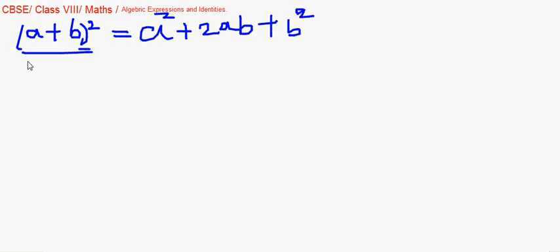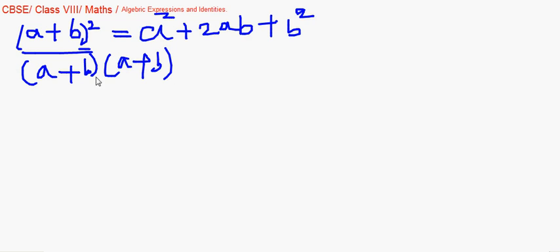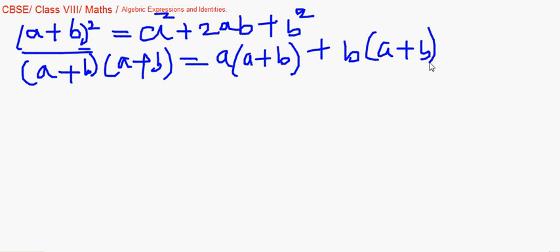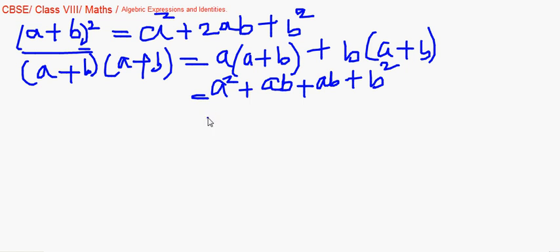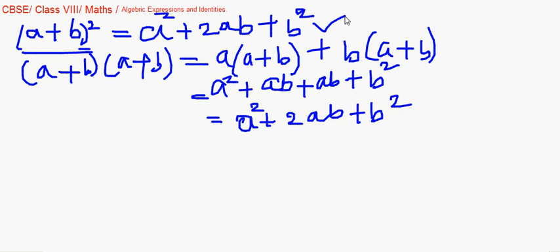What does (a + b) whole square mean? It means you multiply (a + b) twice. When you do so, this is a binomial with a binomial multiplication. You multiply the first term with the second binomial and the second term as well with the second binomial. You get a squared plus ab, and also ab plus b squared, giving us a squared plus 2ab plus b squared.